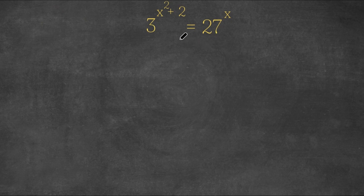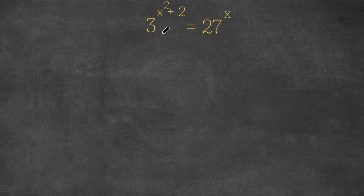As you can see right now our bases are 3 and 27, which aren't the same. So we're going to convert 27 to make it equal 3. And 3 to the power of what equals 27? 3 to the power of 3 equals 27.